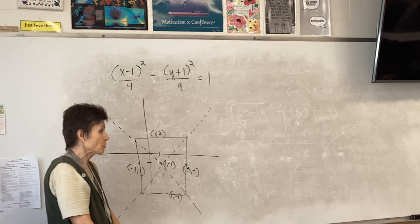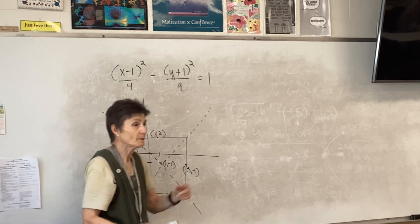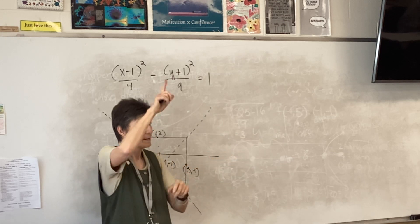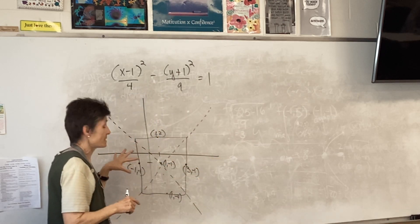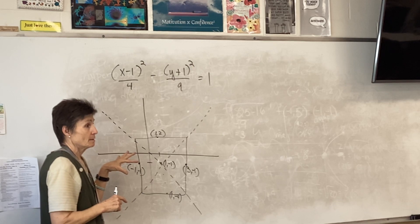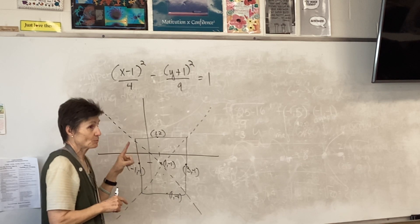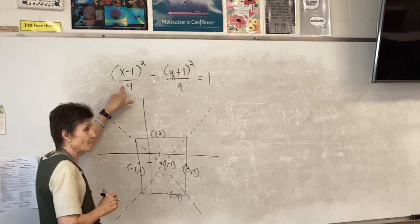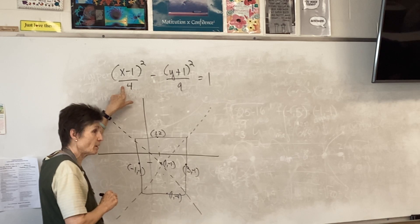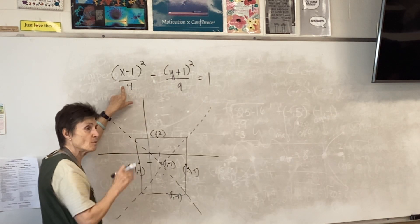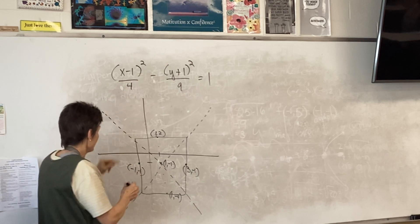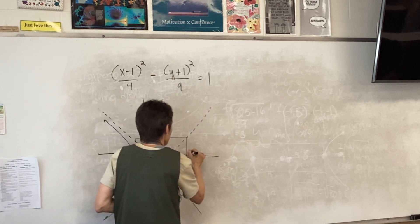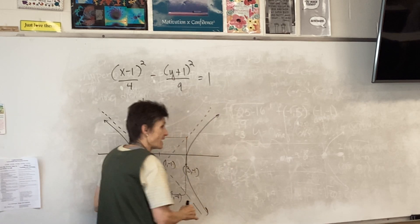Then I'm going to draw in the diagonals of the rectangle. Does this sound familiar? Now I'm going to draw my picture. Remember, a hyperbola either looks like two sideways parabolas — a left and a right — or an up and a down. Which one is this? This one is left and right, because whichever letter comes first in the equation determines the direction.